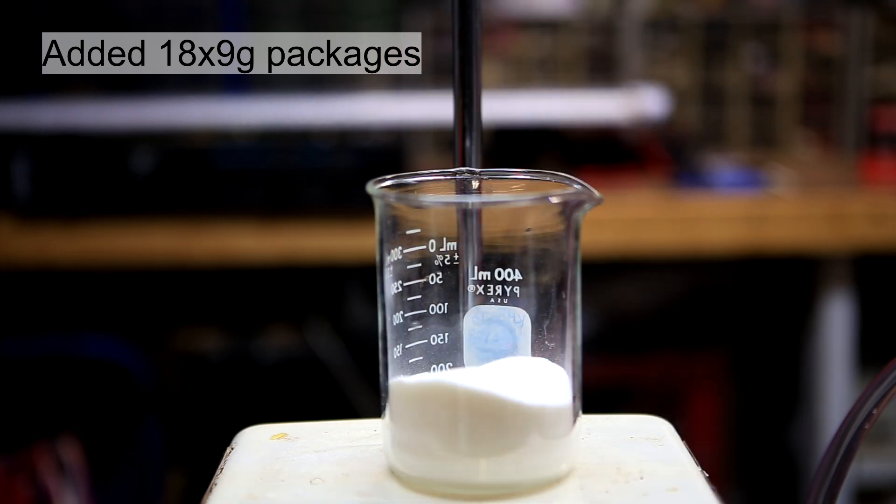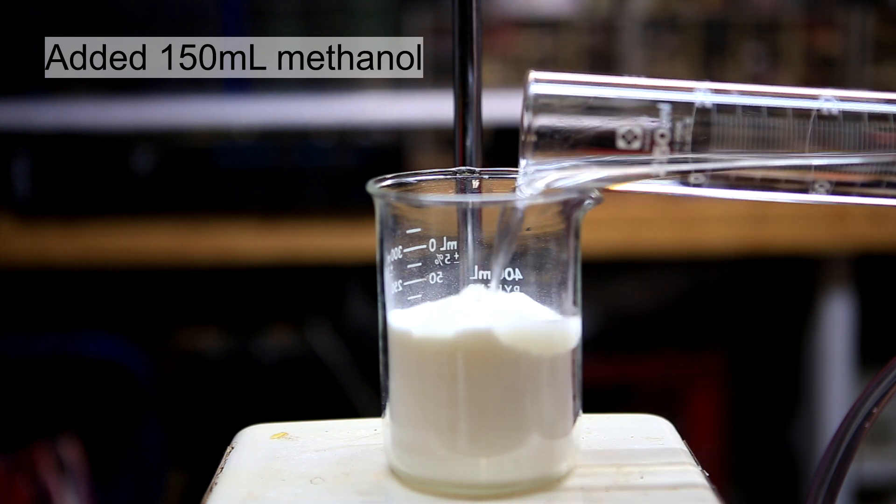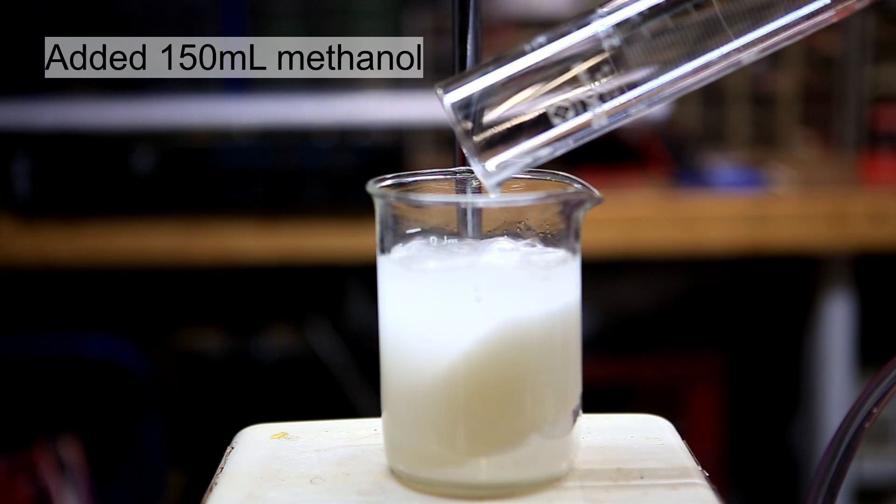18 packages containing 9 grams each of vanilla sugar were poured into a beaker. To this was added 150 milliliters of methanol. Methanol is used because vanillin's solubility in methanol is quite good, but the solubility of glucose and other sugars in methanol is quite poor.